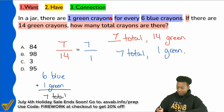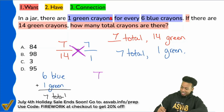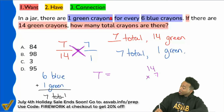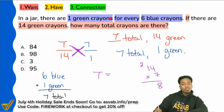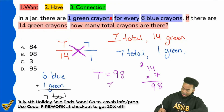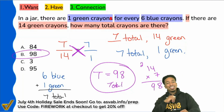Cross-multiplying is the easiest way because either way you're multiplying 14 times seven. And 14 times seven: four times seven is 28, one times seven is seven, carry the two is nine — so we have 98 total. And that's answer choice B.